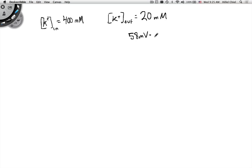58 millivolts times the log of K out over K in. For us, that's 58 millivolts times log of 20 over 400, which is 1/20th. And when we calculate that, it's about negative 75 millivolts. Can't forget your units.